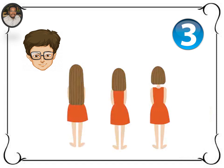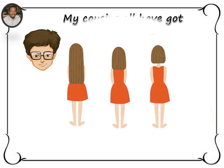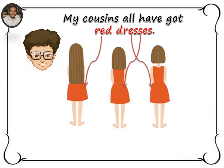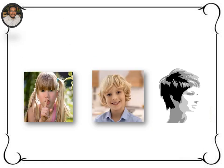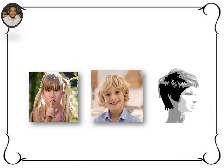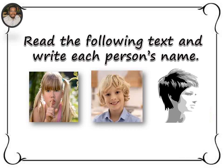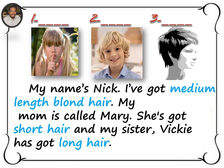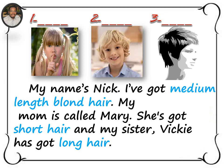And who are these, Jay? These are my cousins. They all have got red dresses but they're different in one thing — it's their hair. Hello, what's your name? My name is Nick. And this is my family. Now read the following text and write each person's name. My name's Nick. I've got medium length blonde hair. My mom is called Mary. She's got short hair. And my sister Vicky has got long hair. Pause the video and take one minute to find the names. Off you go.